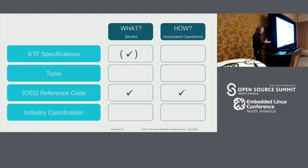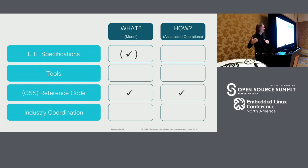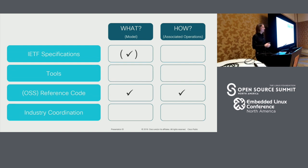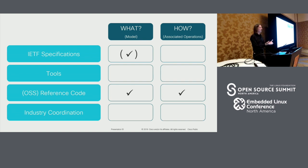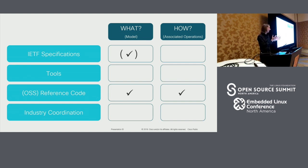If you look at the overall scorecard, we're a little earlier in the game here. We started off cranking out the standards — they're in flight. Standardization takes time, and it's supposed to take time because we want to build something that lasts. At the same time, we created reference code so that people can start to play with it, evaluate, and understand what's working and what's not. Every single hackathon we do at the IETF gives us feedback on nuances that don't work that well, so we can tweak the standard while it's still in flight.